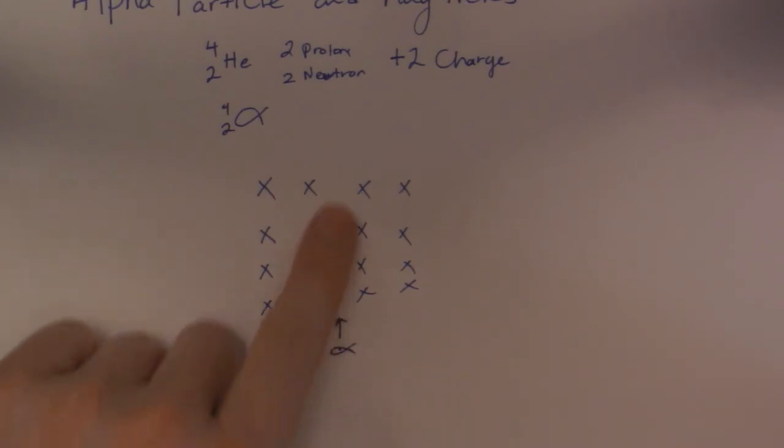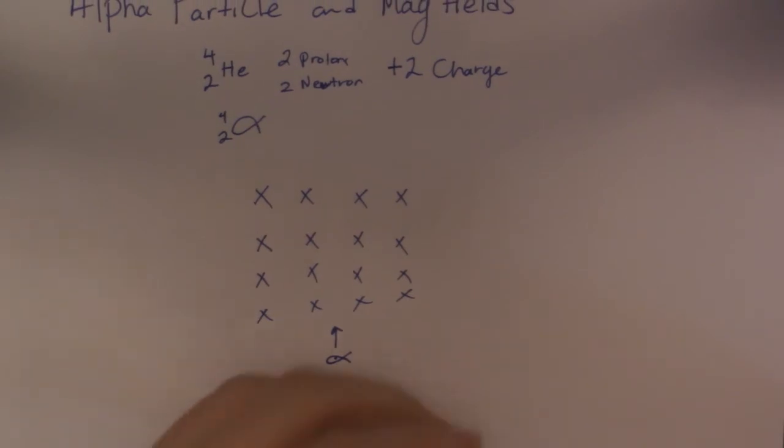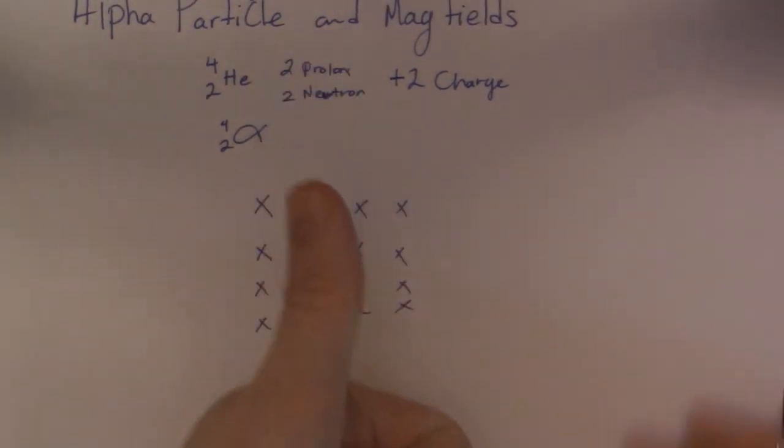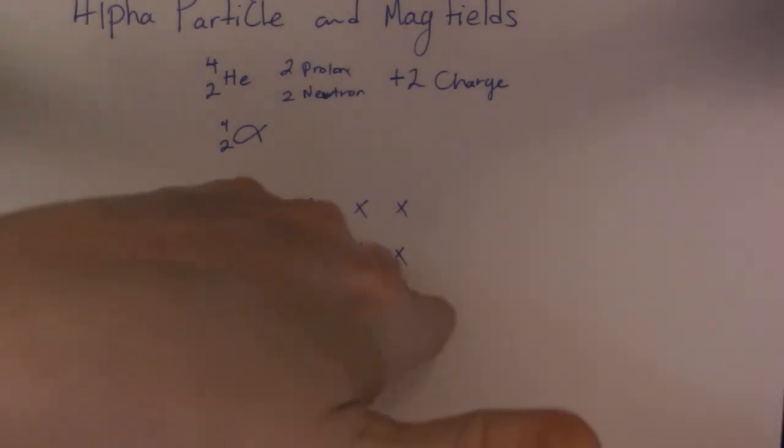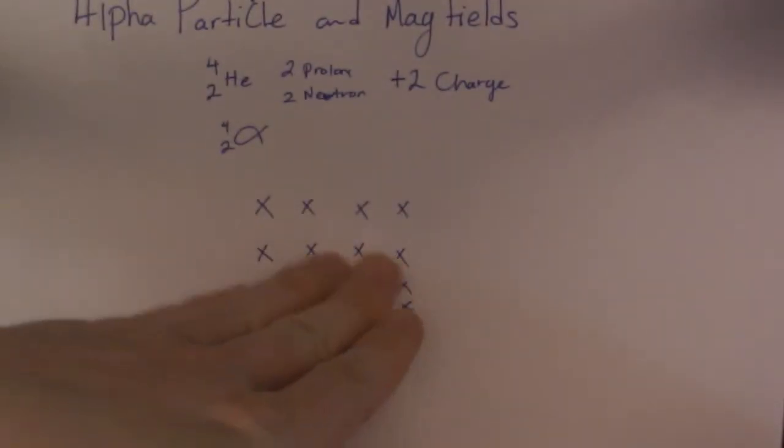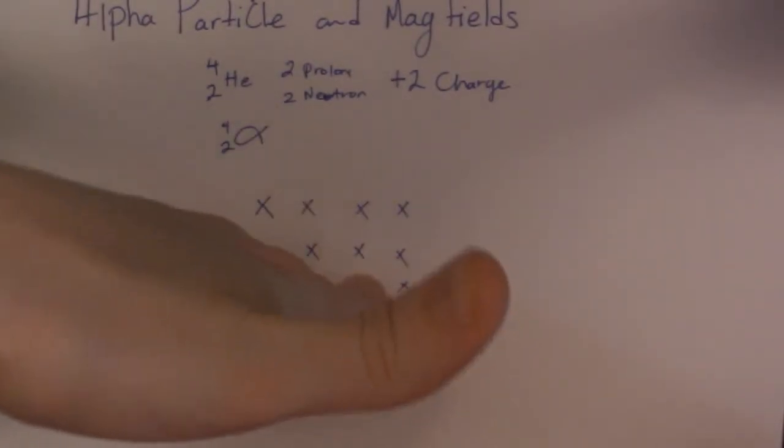So if I have this guy going through the magnetic field like this, I have to direct my hand in that direction. So my thumb is the direction of the guy. My fingers point into the page. So you can sort of picture my hand being pointed this way.